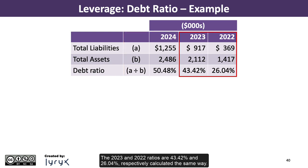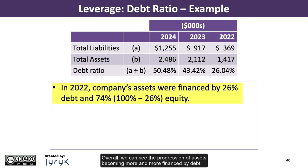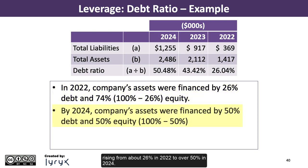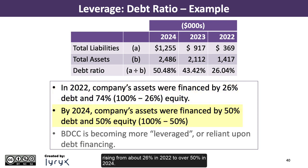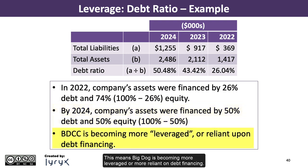The 2023 and 2022 ratios are 43.42% and 26.04%, respectively, calculated the same way. Overall, we can see the progression of assets becoming more and more financed by debt, rising from about 26% in 2022 to over 50% in 2024. This means Big Dog is becoming more leveraged, or more reliant on debt financing.